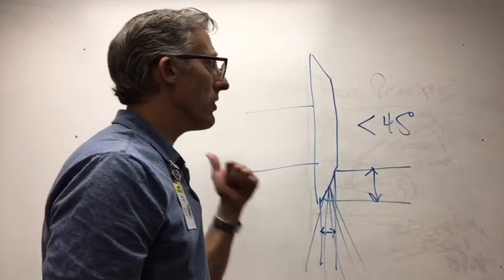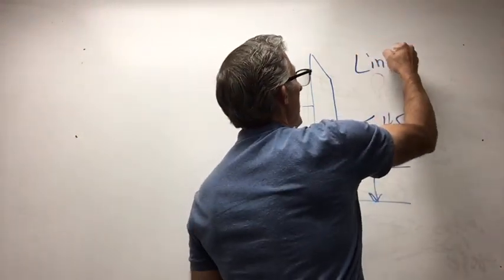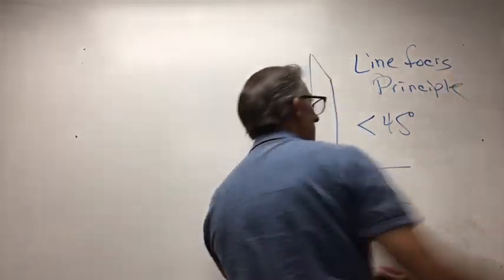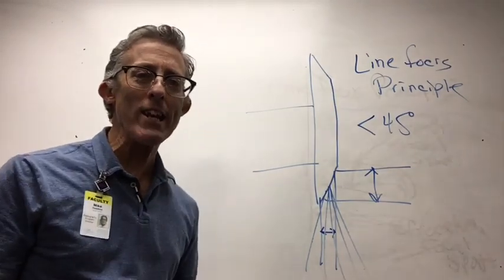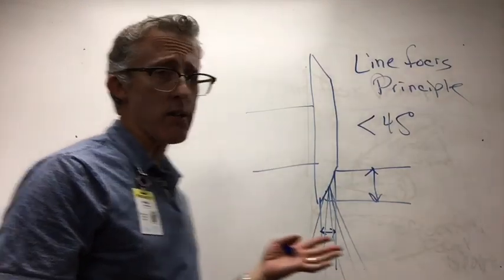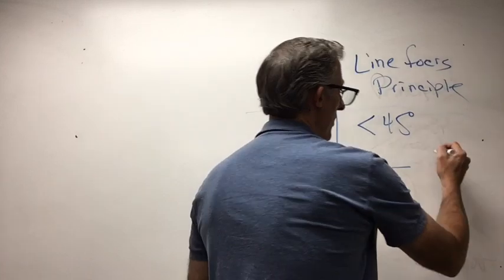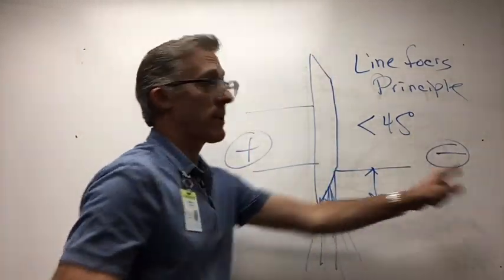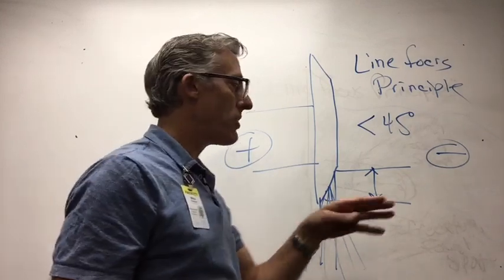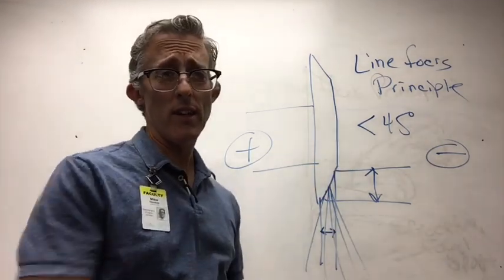Here's my next question for you. How does the line focus principle relate to the anode heel effect? Now, you'll recall the anode heel effect states that there's more intensity on the cathode side. And let's not forget, this is the negative side over here and this is the positive side. Cathode, anode. Don't forget, the anode heel effect states there's more intensity over here on the cathode side. How does that relate to the line focus principle?